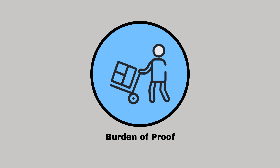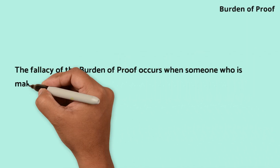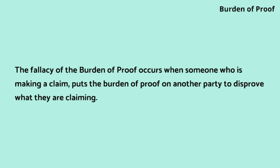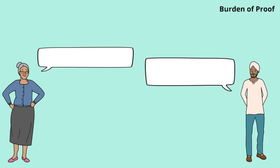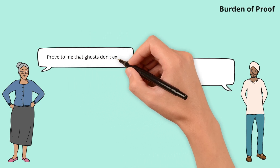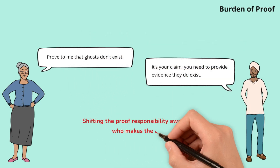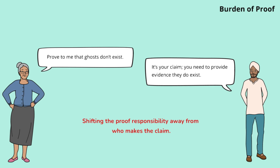Burden of proof. The fallacy of the burden of proof occurs when someone making a claim puts the burden of proof on another party to disprove what they are claiming. Emma demands that Ryan prove a negative, shifting the burden of proof. Ryan corrects this by stating that the person making a claim must provide the evidence.